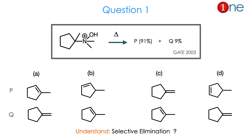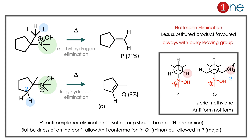The position of the double bond is the real question here. From the reactant to product, you might understand that selective elimination — you can say Hofmann elimination — is involved. The answer is C. The starting material is a quaternary ammonium salt, which is very unstable because it possesses charge. You are simply heating it, so it will try to eliminate. There are two possibilities: which hydrogen will leave — the hydrogen in the methyl group or the ring hydrogen.